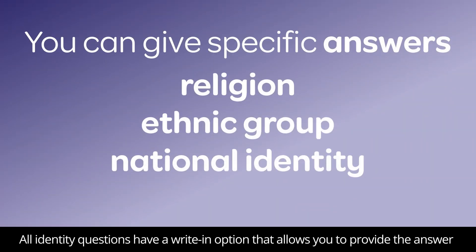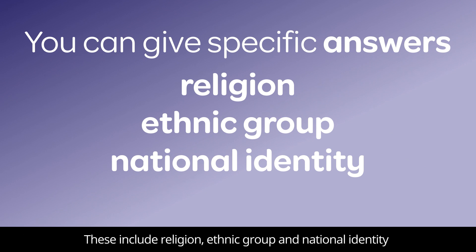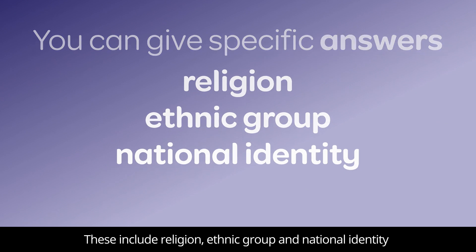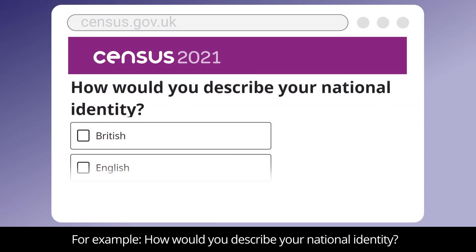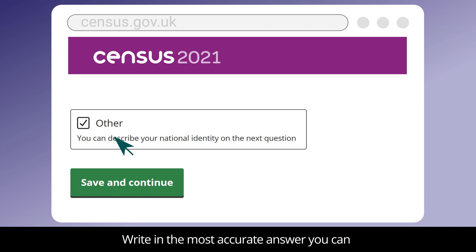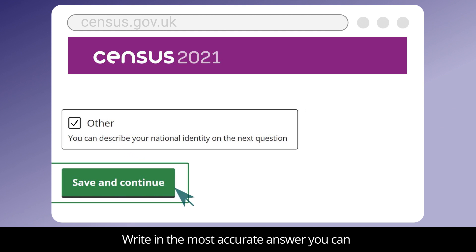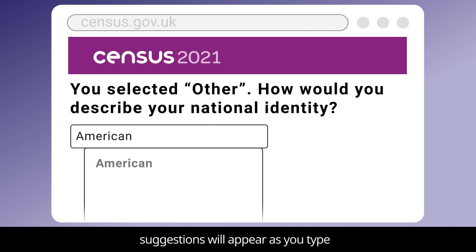All identity questions have a write-in option that allows you to provide the answer that you feel best represents you. These include religion, ethnic group and national identity. For example, how would you describe your national identity? Write in the most accurate answer you can. Suggestions will appear as you type.